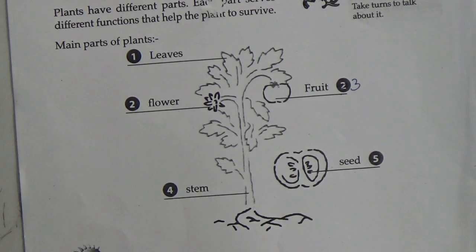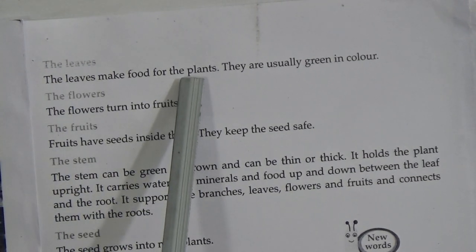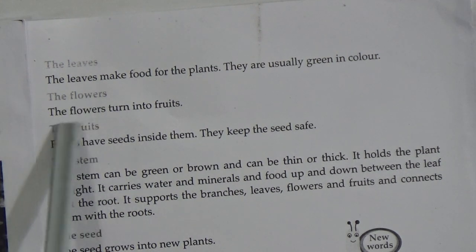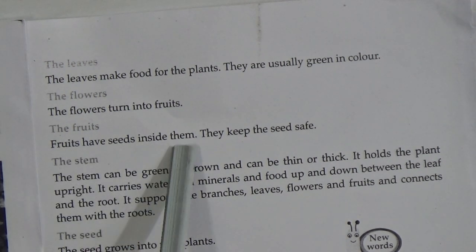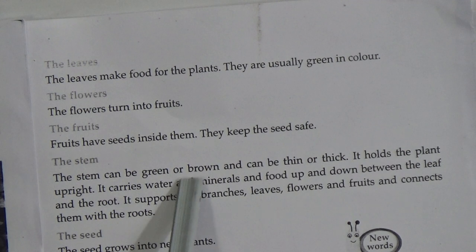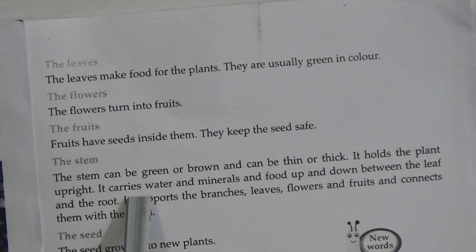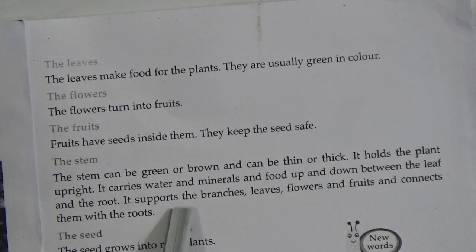This is page number 13. The leaves make food for the plants; they are usually green in color. The flowers turn into fruits. The fruits have seeds inside them and they keep the seeds safe. The stem can be green or brown and can be thin or thick. It holds the plant upright and carries water, minerals, and food up and down between the leaf and the root.